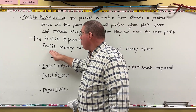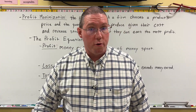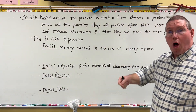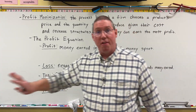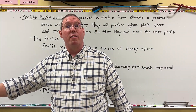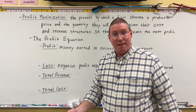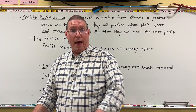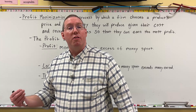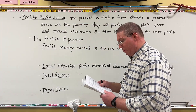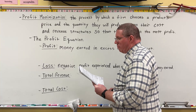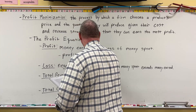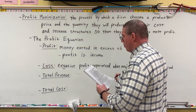The profit of the firm belongs to the owners of the firm. Any money earned in excess of money spent belongs to the owners — it's what's left over that they get to keep. Profit is the reason people start businesses; the owners start a business so that they can earn profit, because the profit of the firm is their income. Profit is income for the owners of the firm.